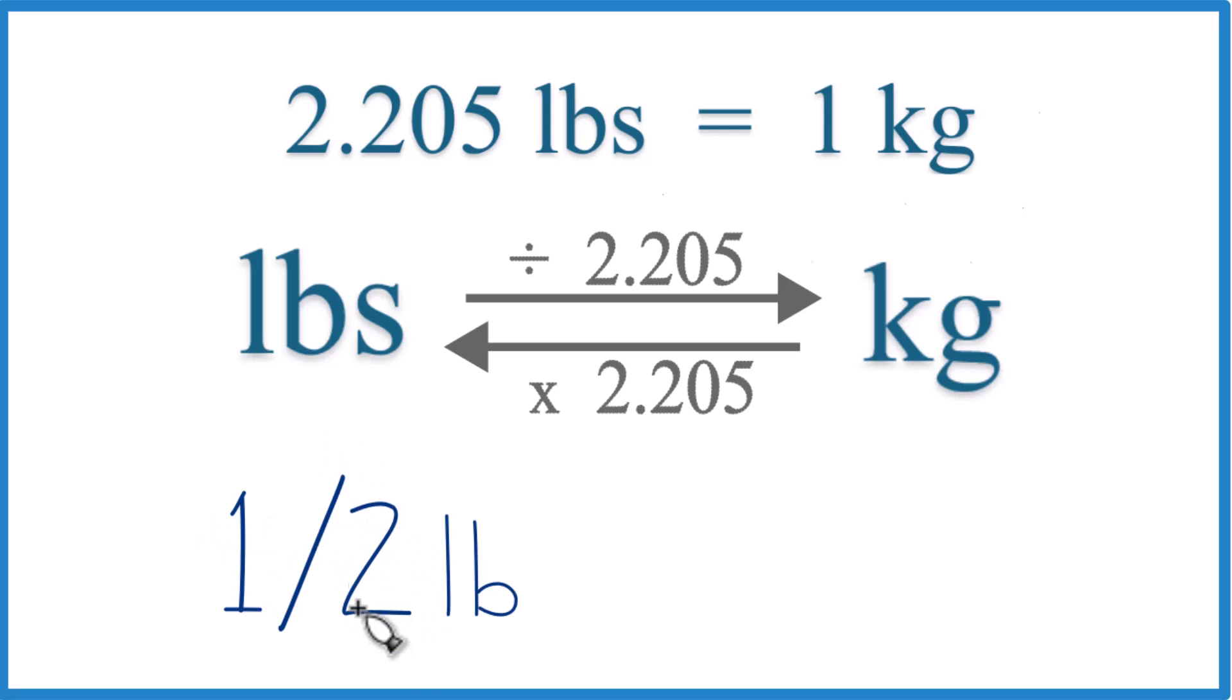One divided by two, that gives us 0.5. So let's use that. So now we have 0.5 pounds, and we can see that when we go from pounds to kilograms, we're going to divide by 2.205, and that comes from our conversion factor. There are 2.205 pounds in one kilogram.